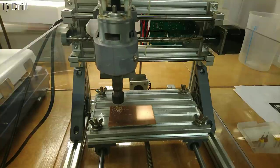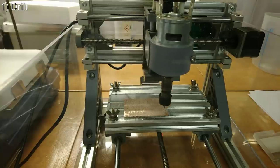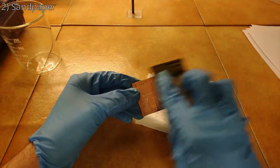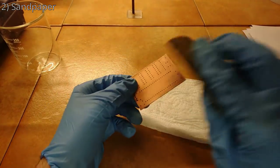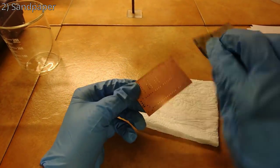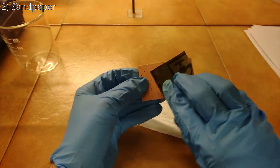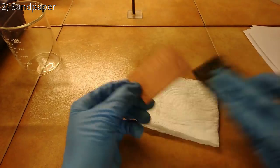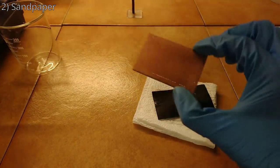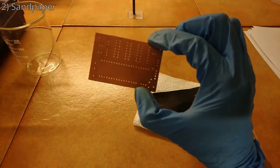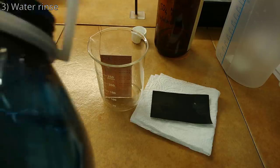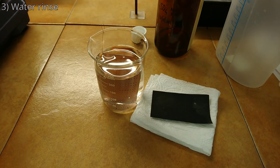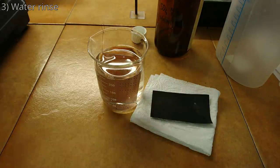The next step is a light sandpaper step to remove burrs left by the drilling process. Both sides need to be sandpapered. Wetting the sandpaper with water helps. I'm using 320 grit sandpaper, but it is not critical. Just don't use too coarse sandpaper and don't go as far as to remove the copper. The next step is a simple water rinse to remove dust particles. I'm using deionized water as I'll be reusing this water for the next step.